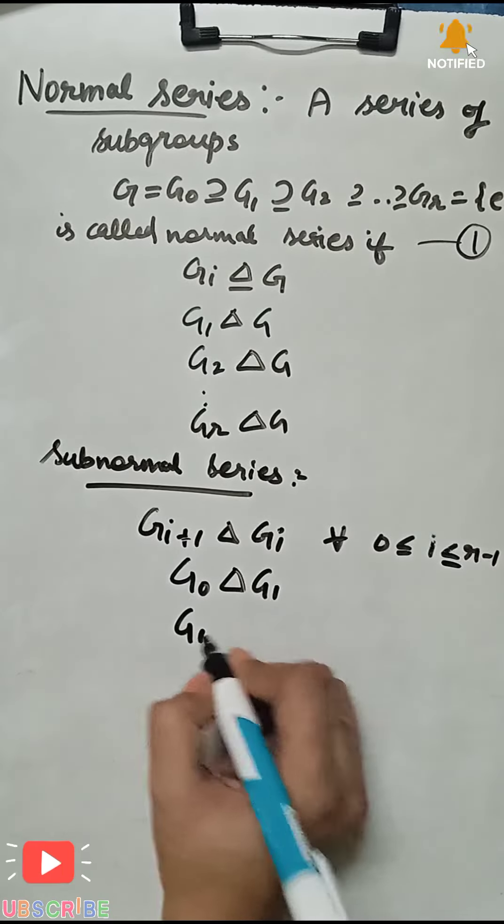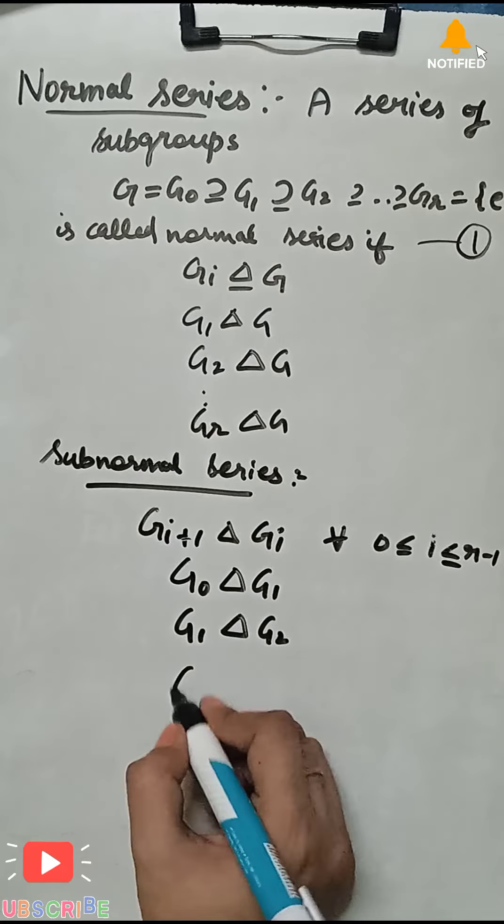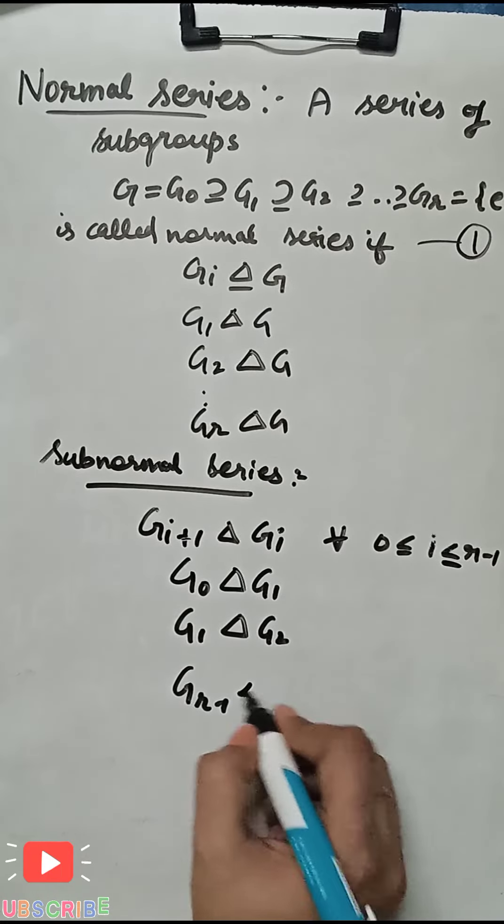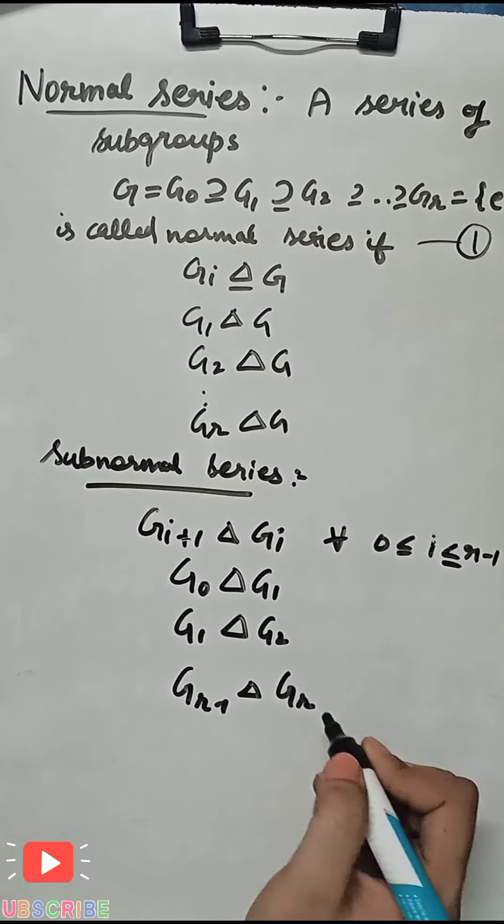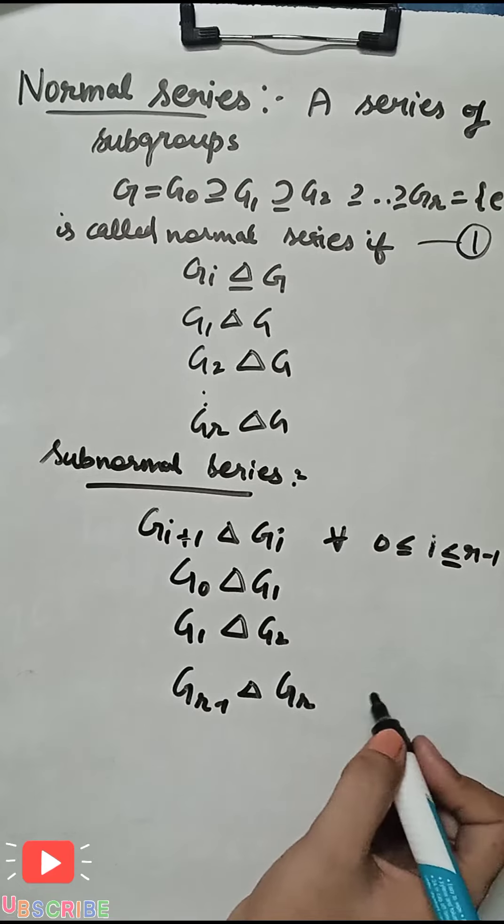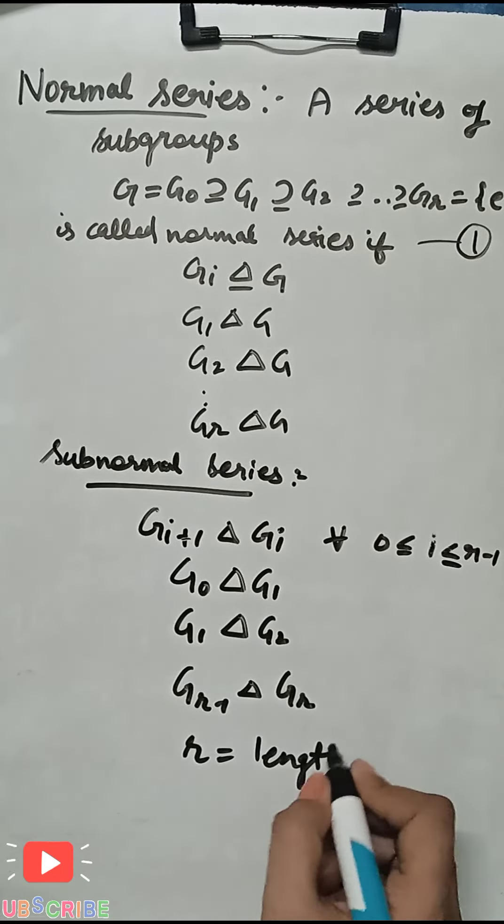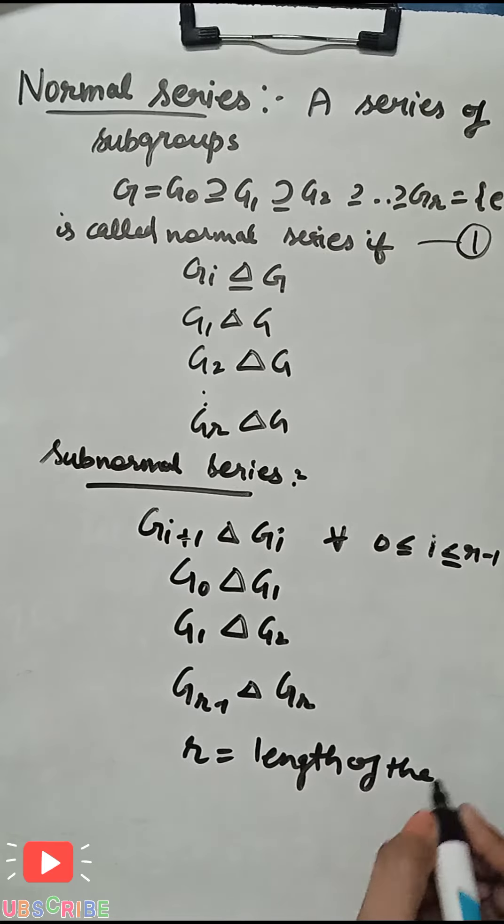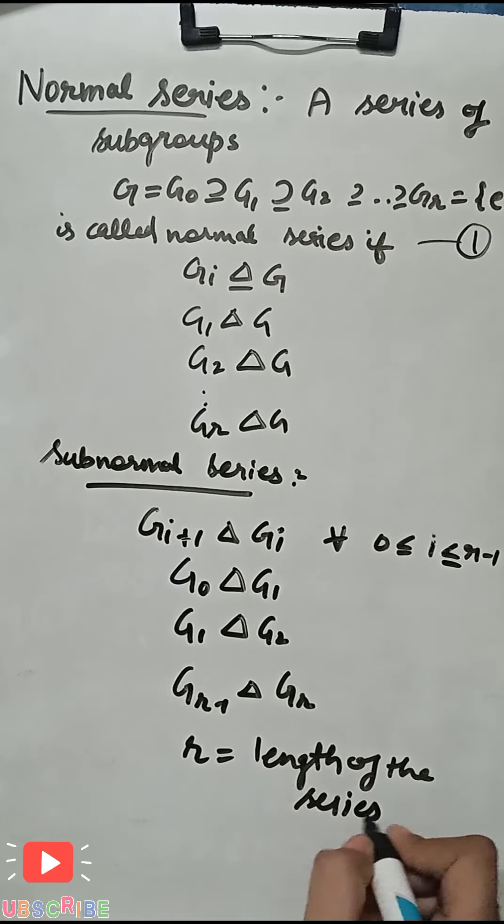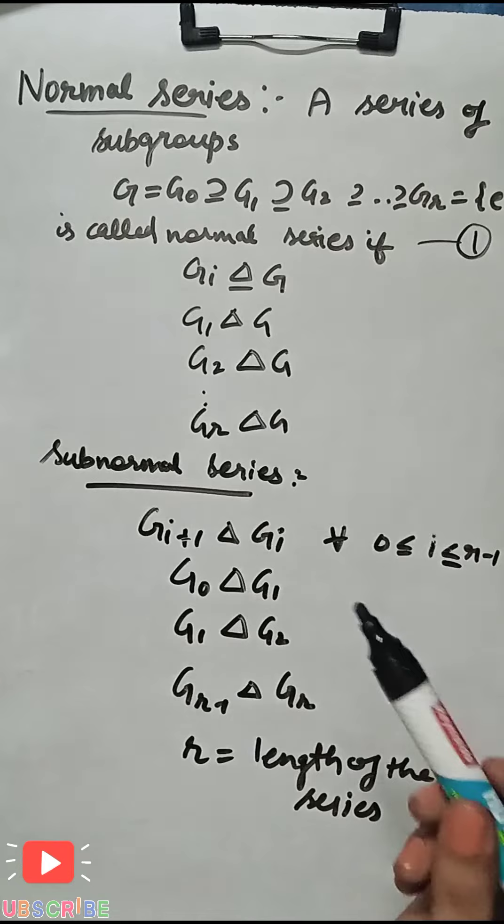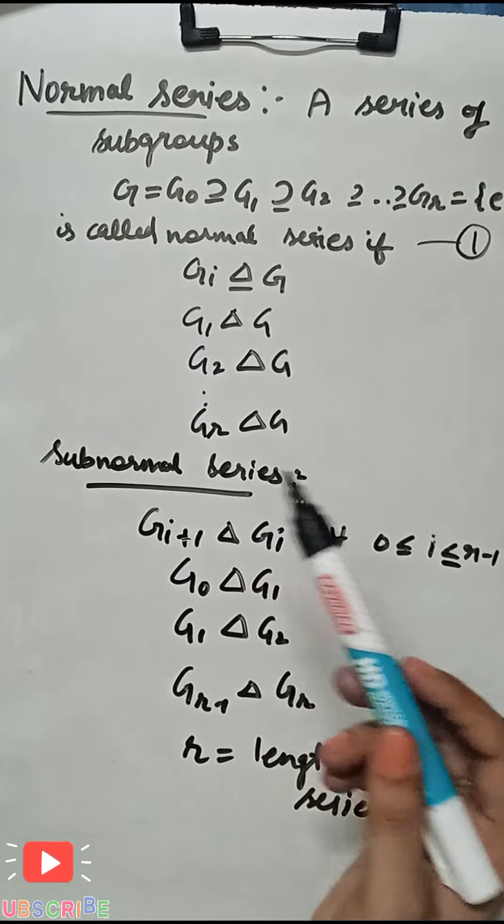In a subnormal series, G1 is normal in G2, G2 is normal in G3, and so on. Each Gi is normal in Gi+1. The length of the series is denoted as r, which is the number of steps in the series.